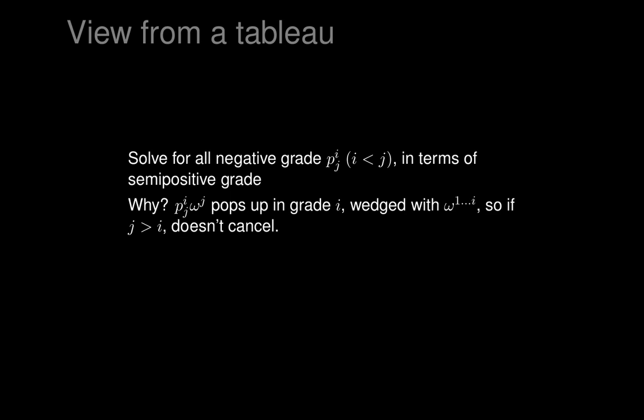Why is there such an equation? Look at how p_ij times omega_j arises. It pops up in grade i, because it is one of the coefficients of the polar pi_i. So it appears somewhere in grade i, which looks like some polar wedged with omegas. It's wedged with forms omega_something, omega_something, all the way up to omega_i. It's certainly wedged with omega_i and nothing more — there's nothing after omega_i that it's wedged with.